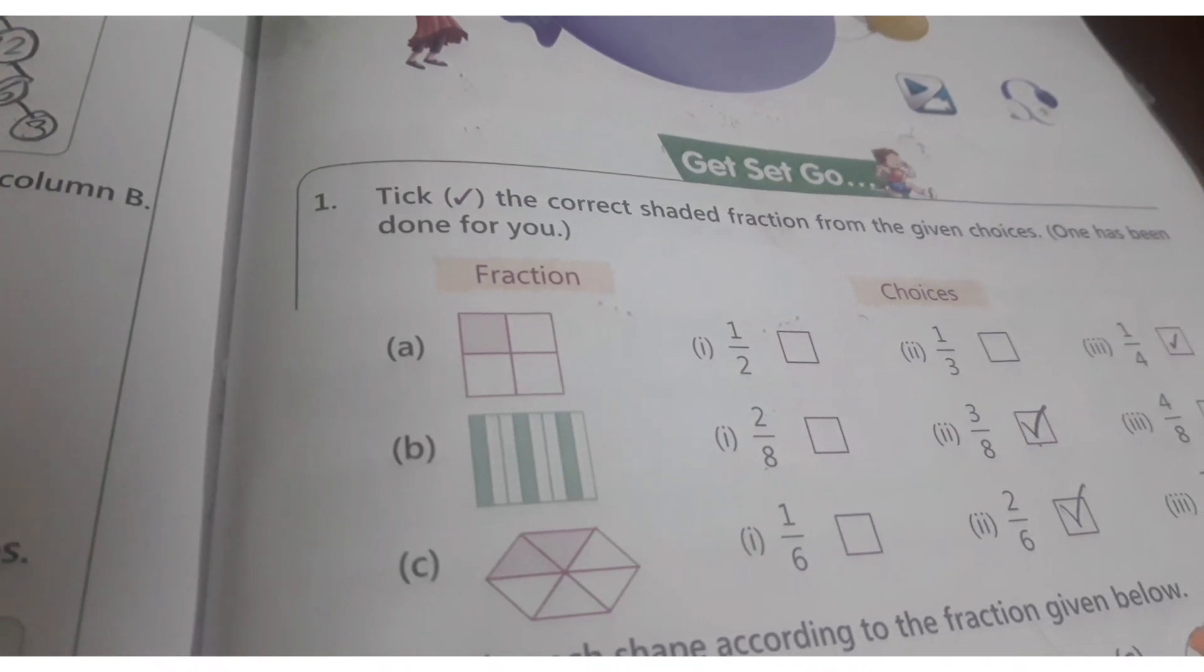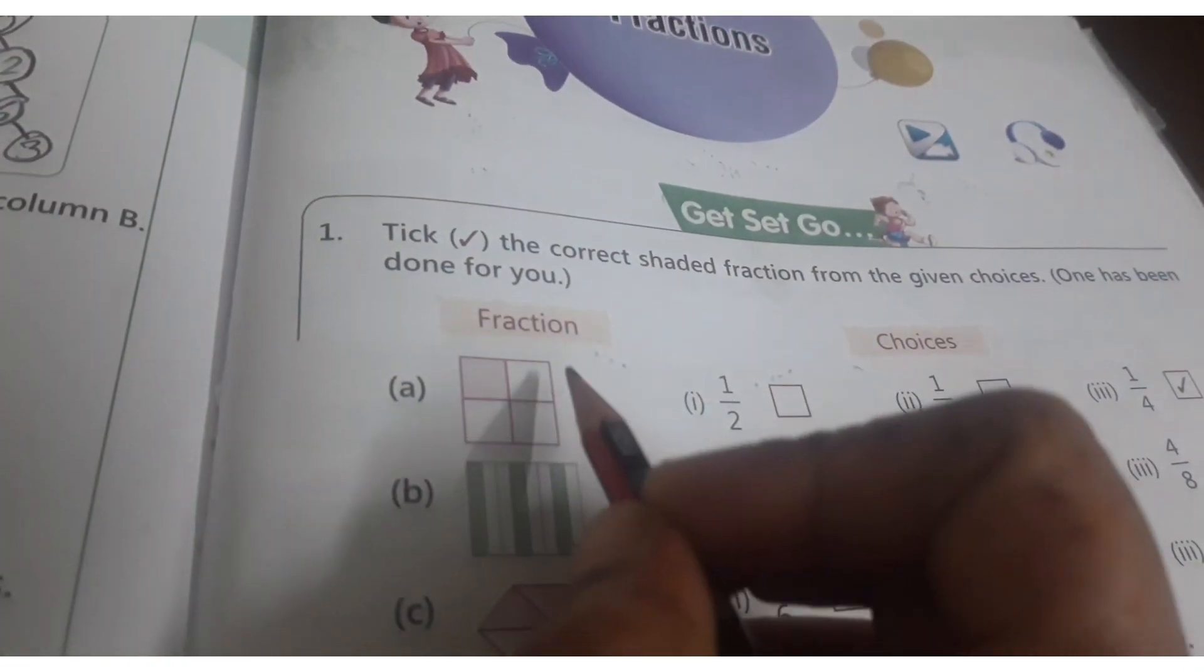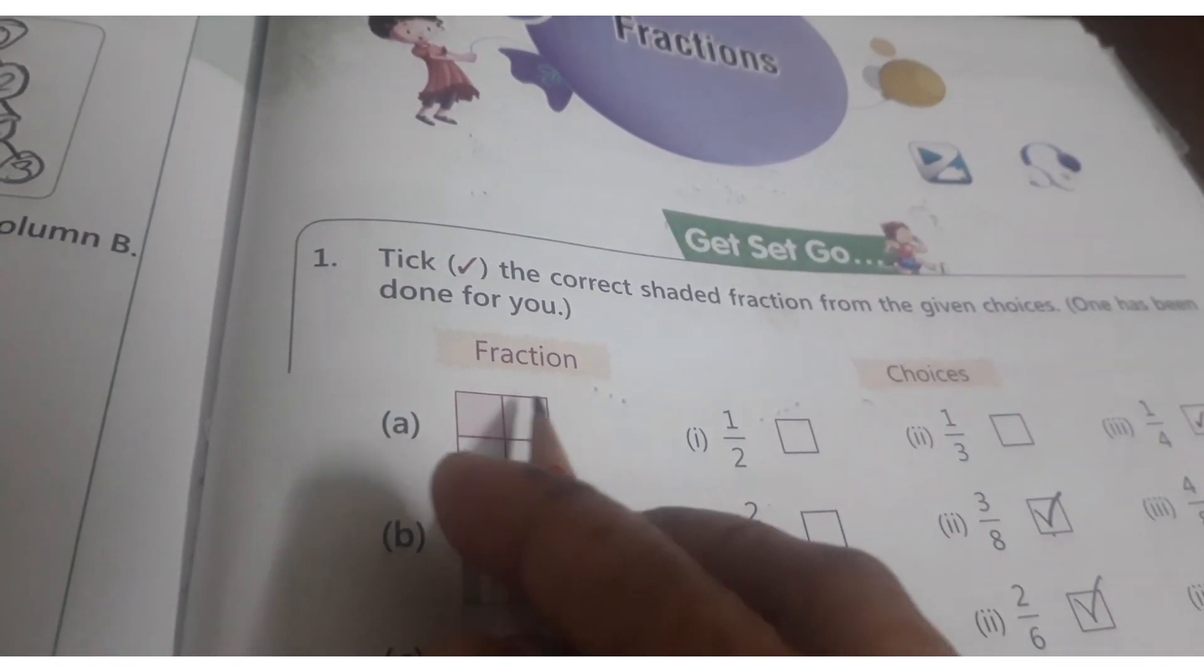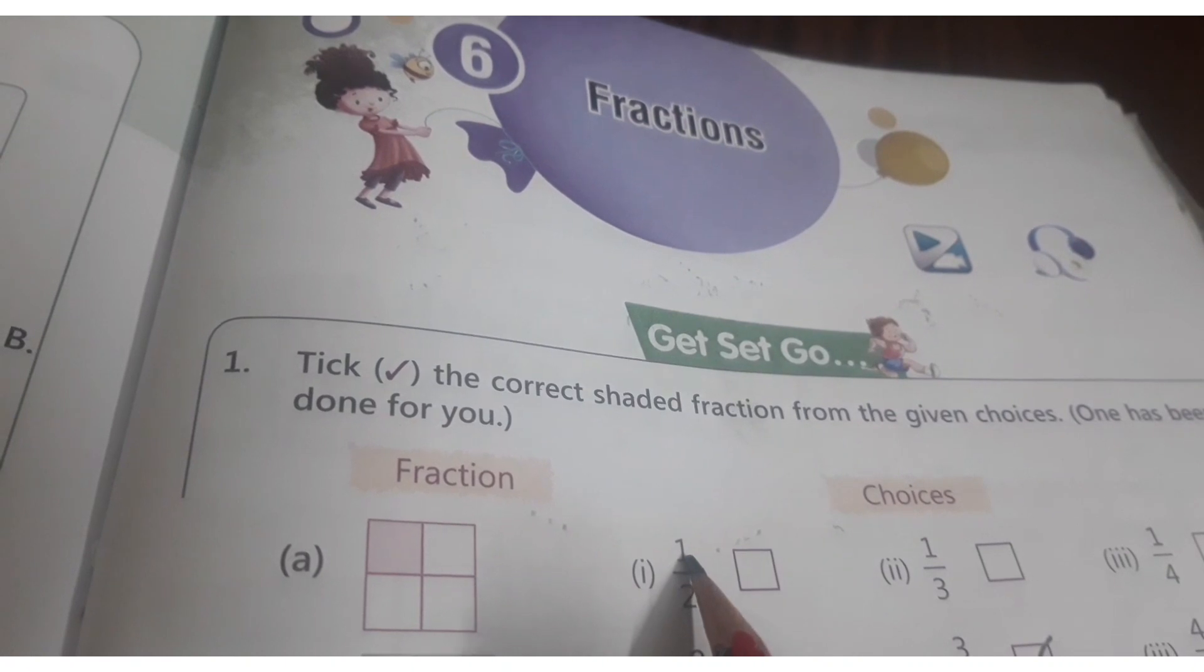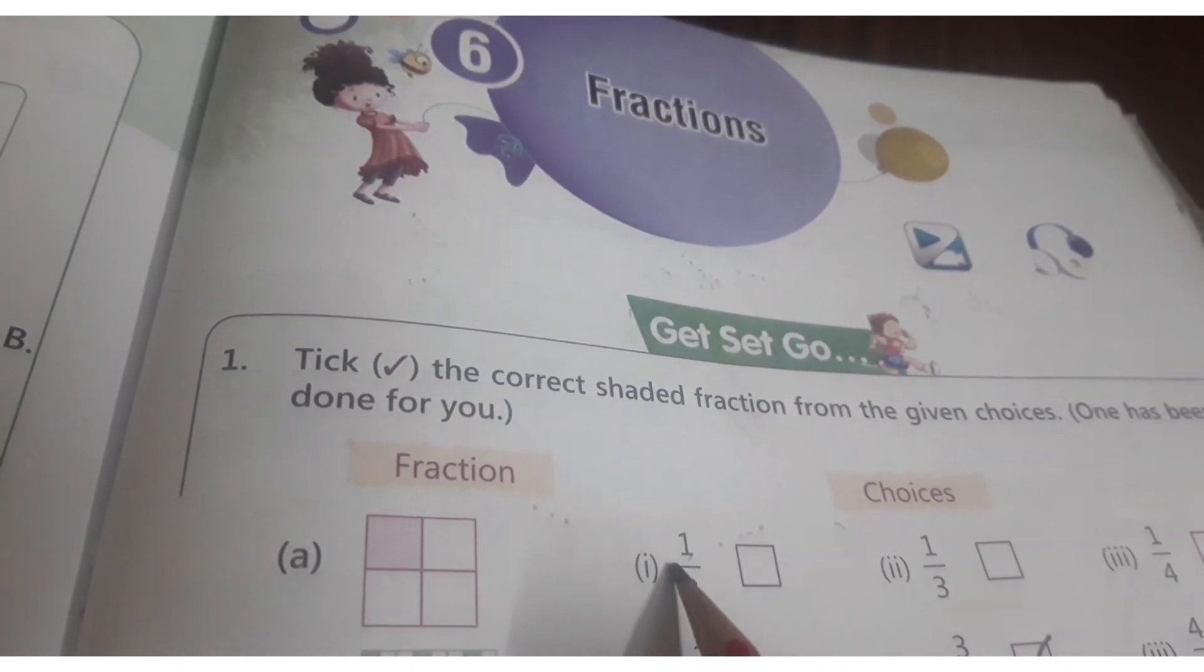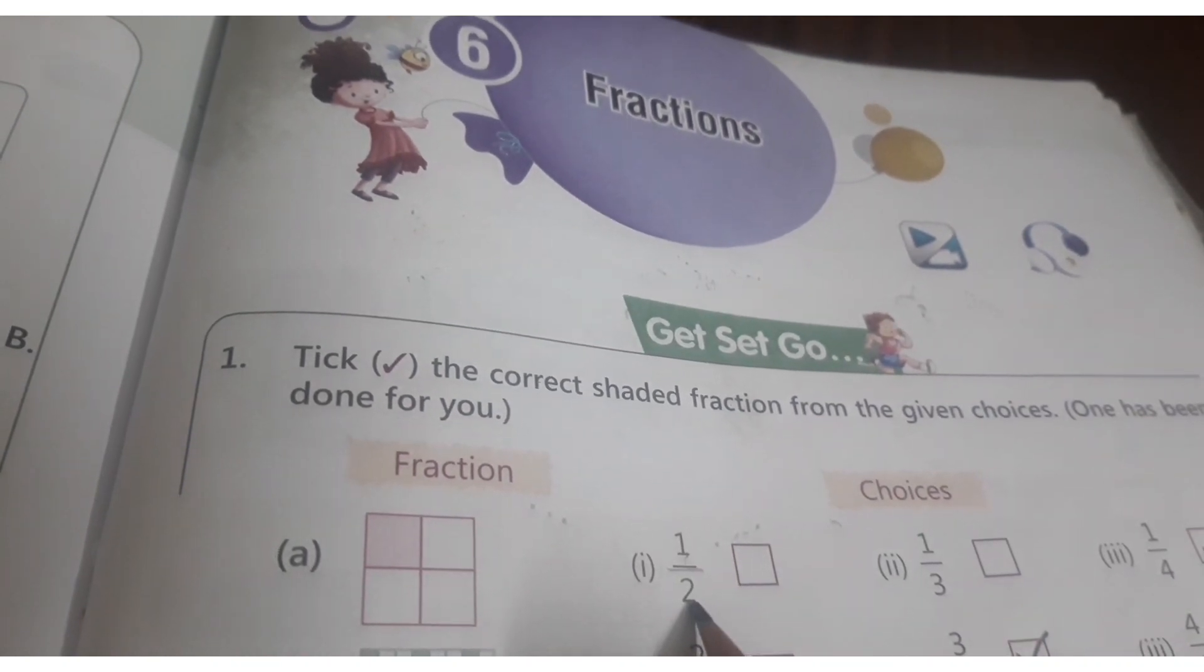Now fraction means a part of a whole. The number above the line is called numerator, the number below is denominator. So above the bar line is numerator, below the number is denominator.